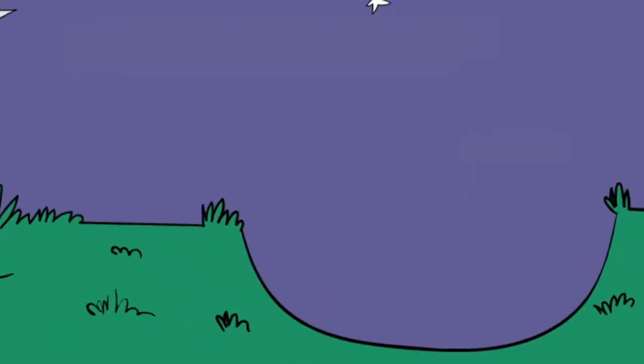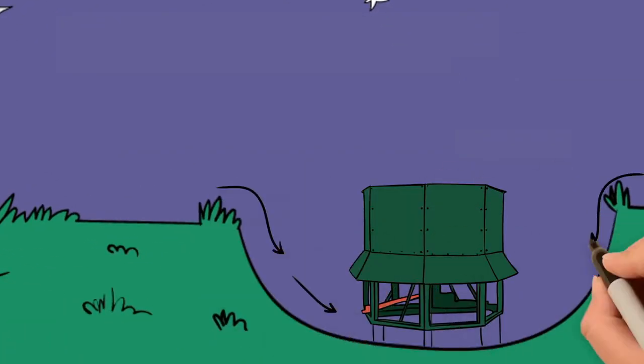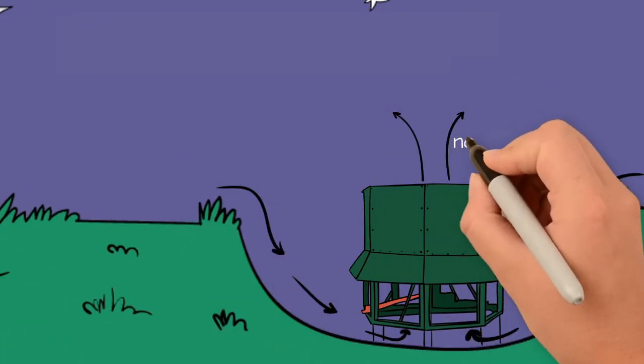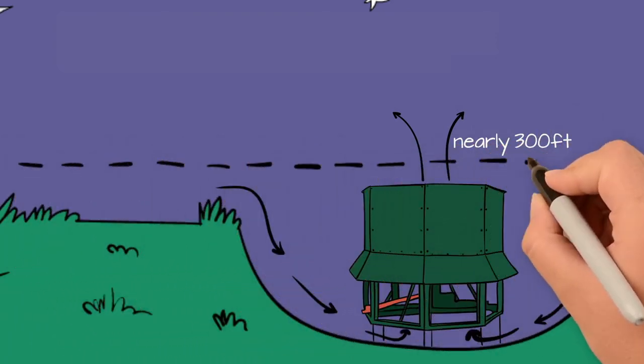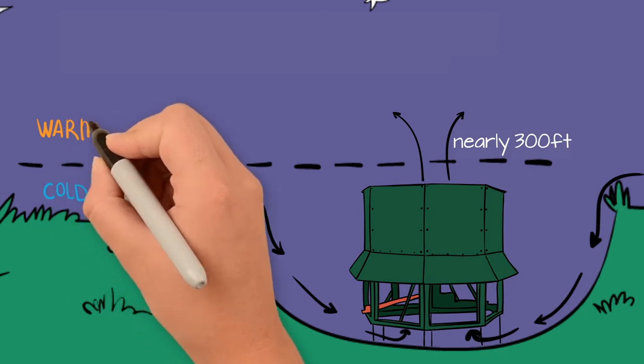Jackrabbit's cold air drains pushes the cold air upward to a height of nearly 300 feet, 33.44 meters. As the coldest air is being sent up, it collects and mixes with the warmer, lighter air from above.